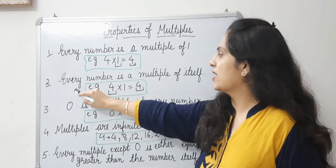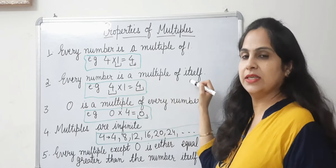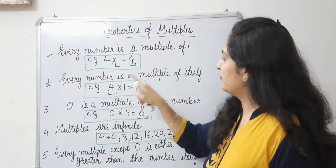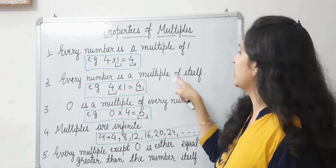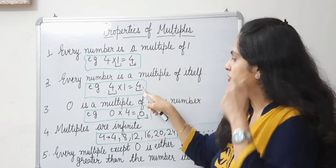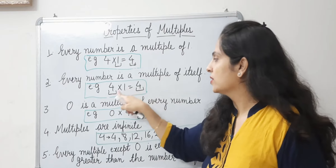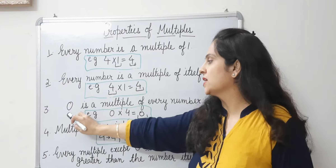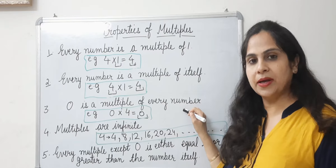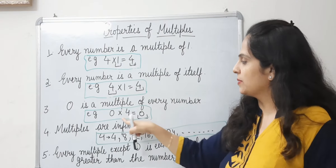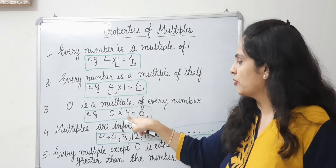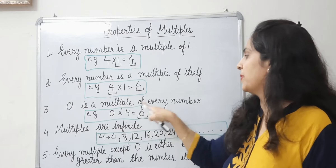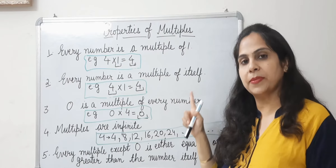Next, every number is a multiple of itself. For example, 8 is a multiple of 1 — that is, itself. Also, 0 is the multiple of every number. If we multiply 0 by 4, we will get 0 itself. So 0 is a multiple of every number.